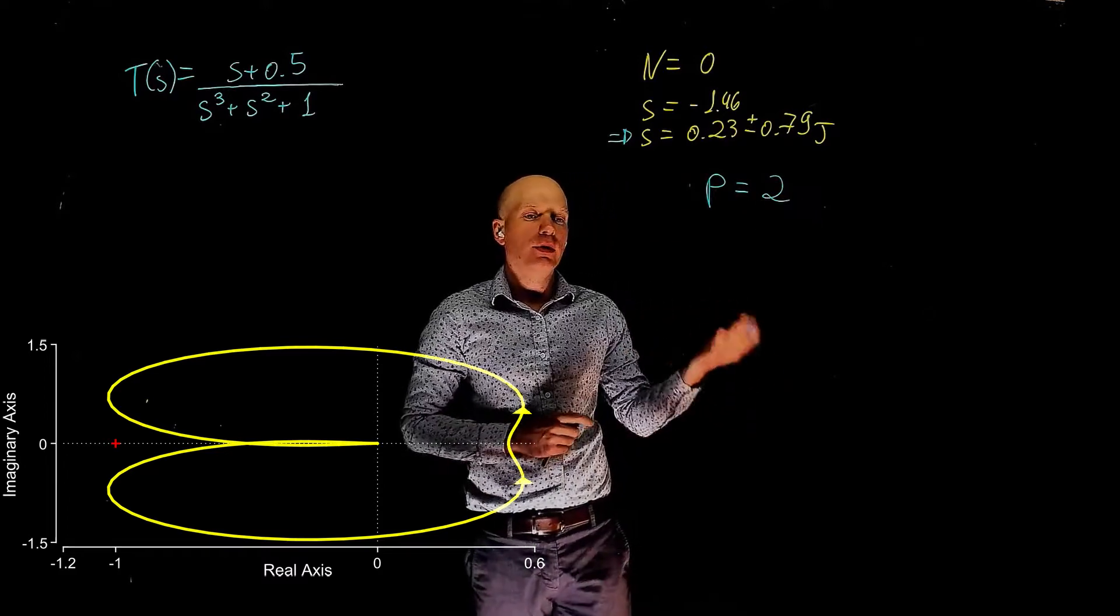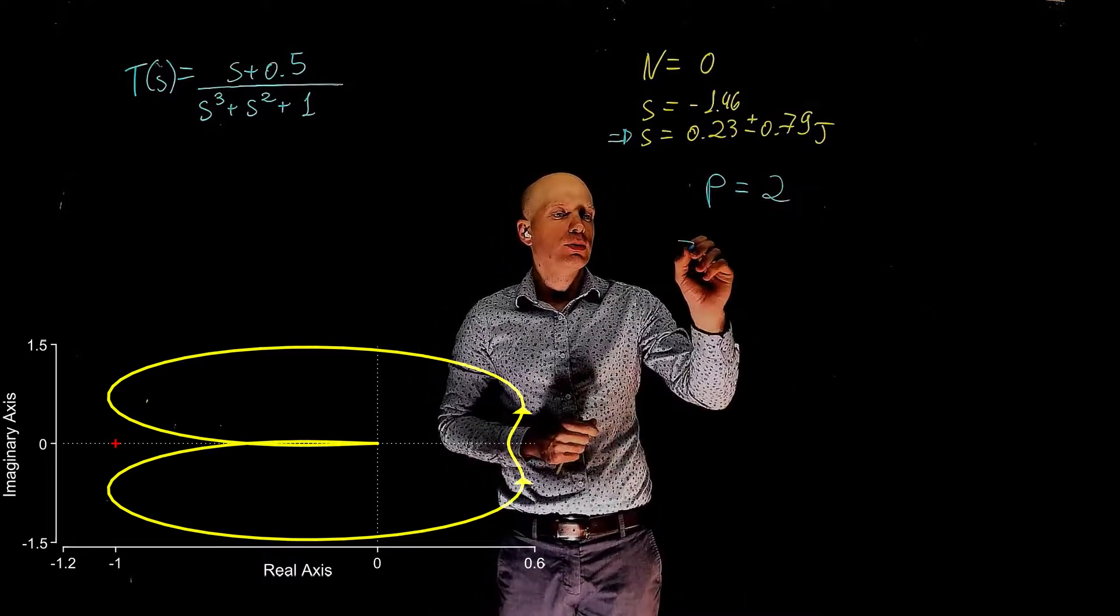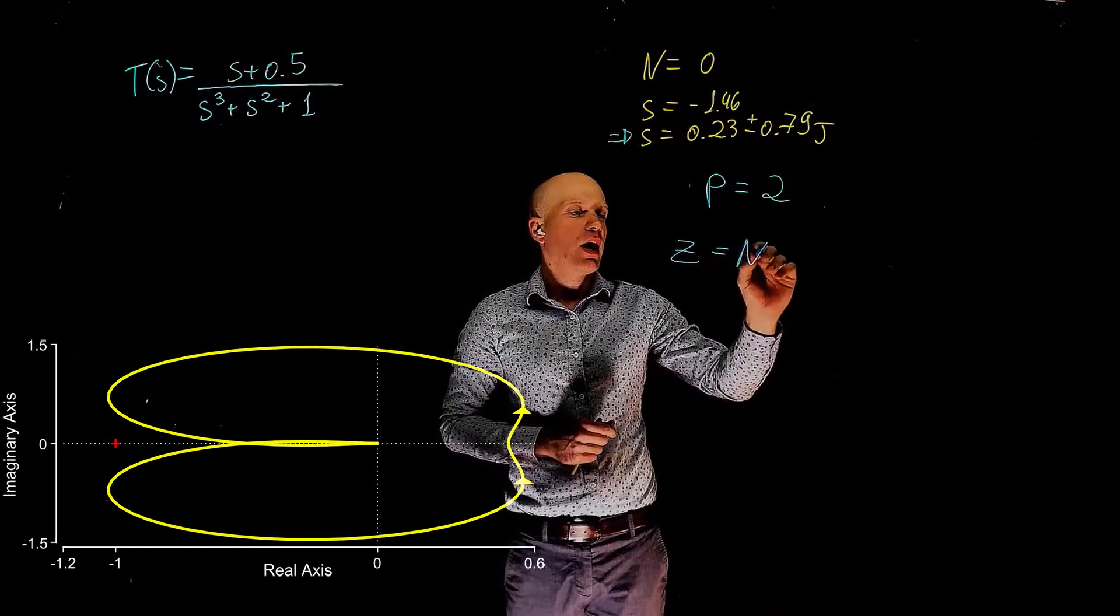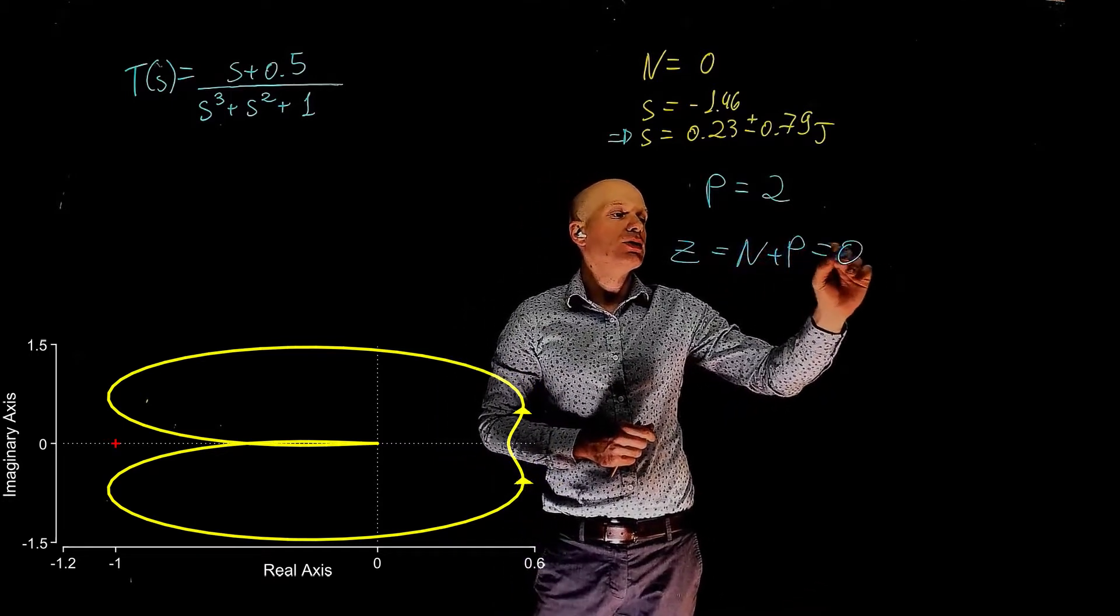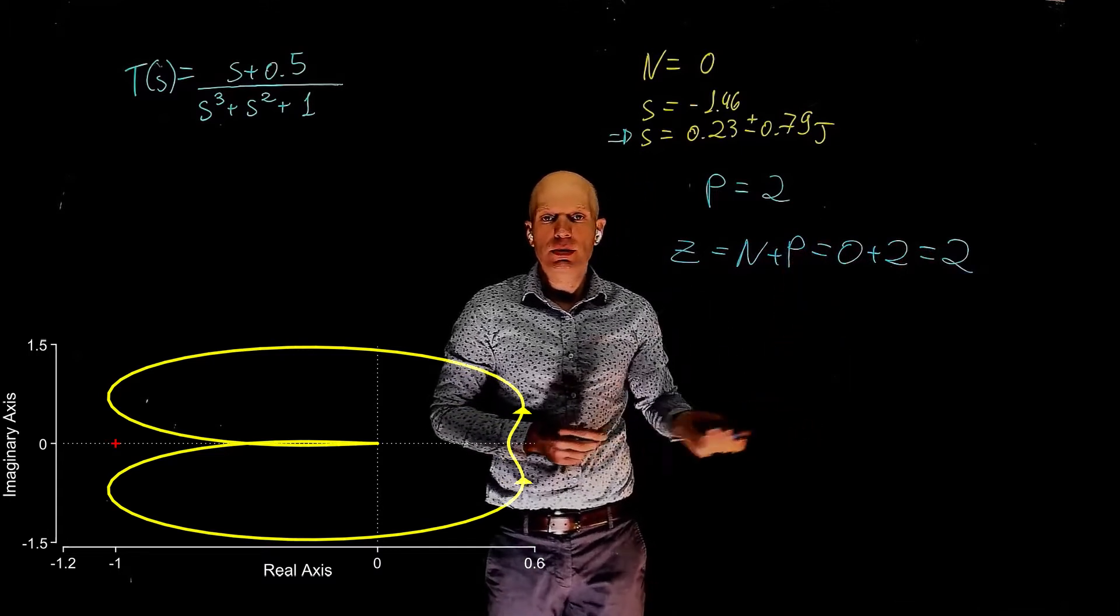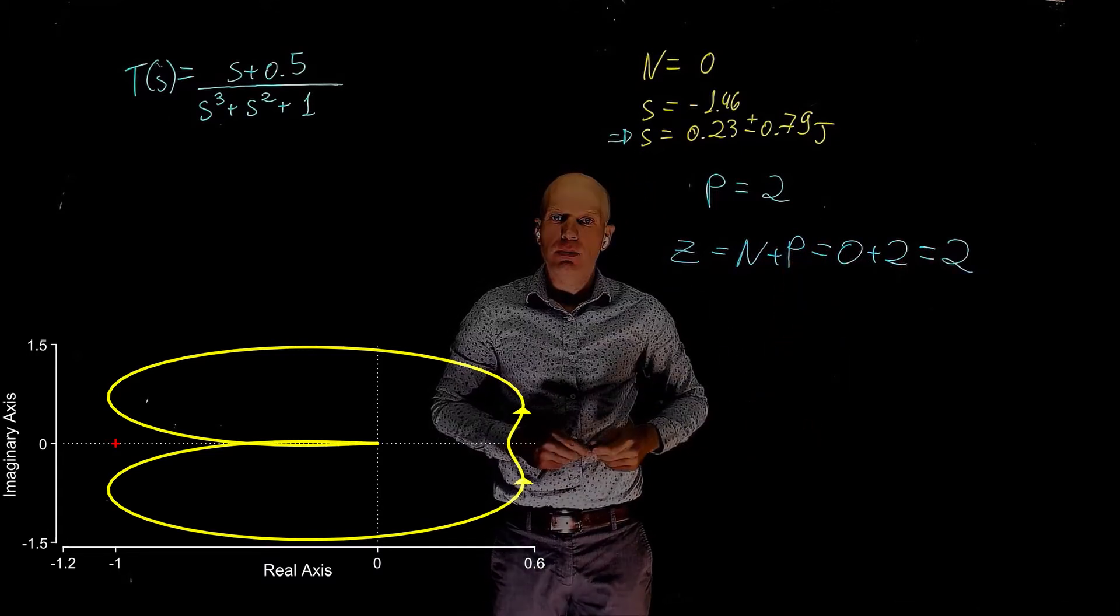Hence, the number of unstable poles of the closed-loop system is N plus P, which is 0 plus 2 equals 2. The system is then closed-loop unstable.